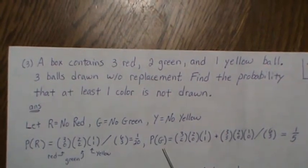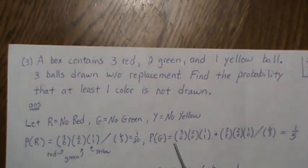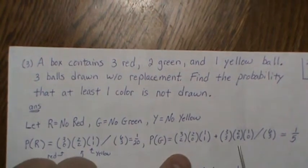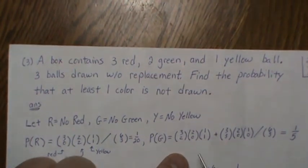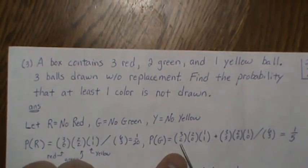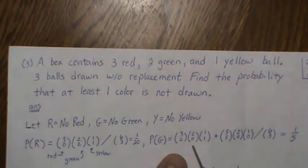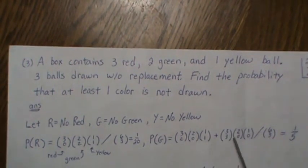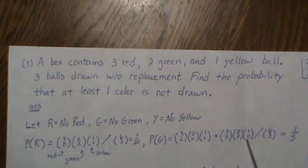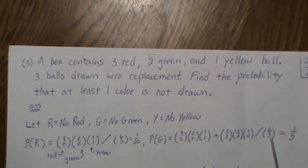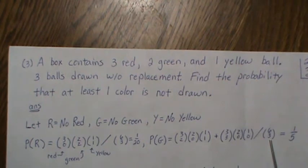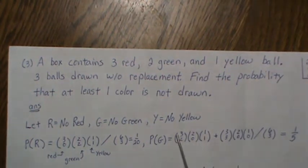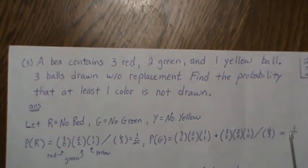The probability of no green has two scenarios: draw two from red, zero from green, one from yellow; or draw three reds, zero green, and zero yellows. These are combinations over six choose three, and the result reduces to one-fifth.